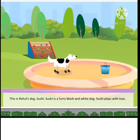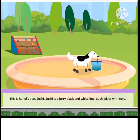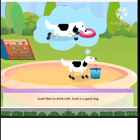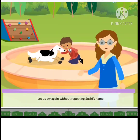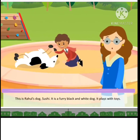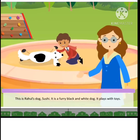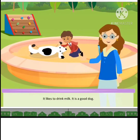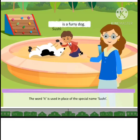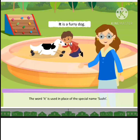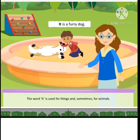This is Rahul's dog, Sushi. Sushi is a furry black and white dog. Sushi plays with toys. Sushi likes to drink milk. Sushi is a good dog. Let us try again without repeating Sushi's name. This is Rahul's dog, Sushi. It is a furry black and white dog. It plays with toys. It likes to drink milk. It is a good dog. The word 'it' is used in place of the special name Sushi. The word 'it' is used for things and sometimes for animals.